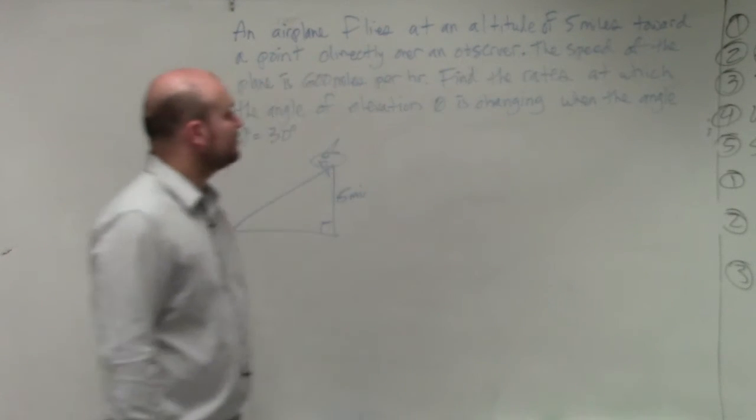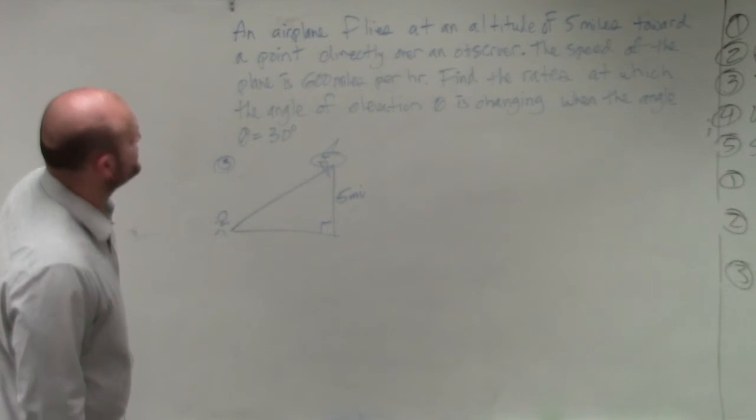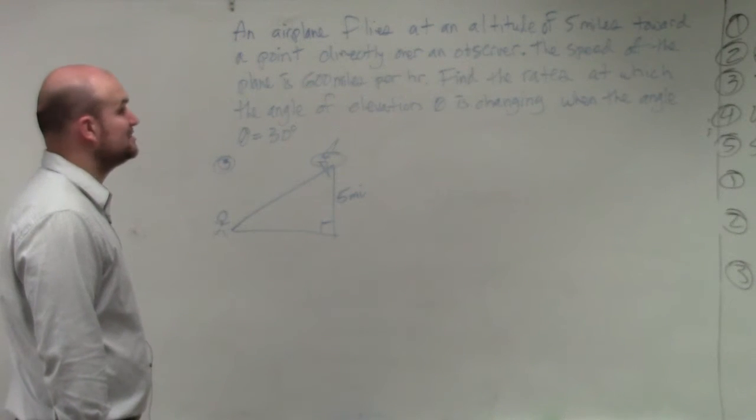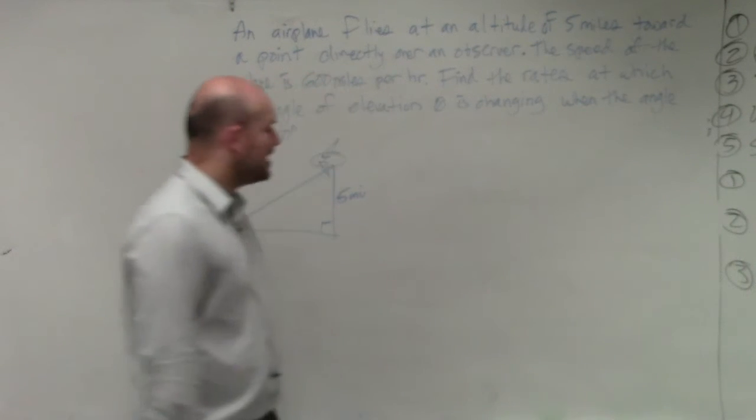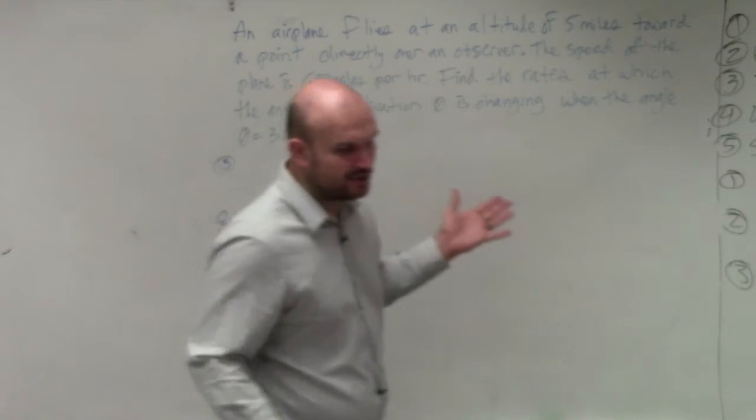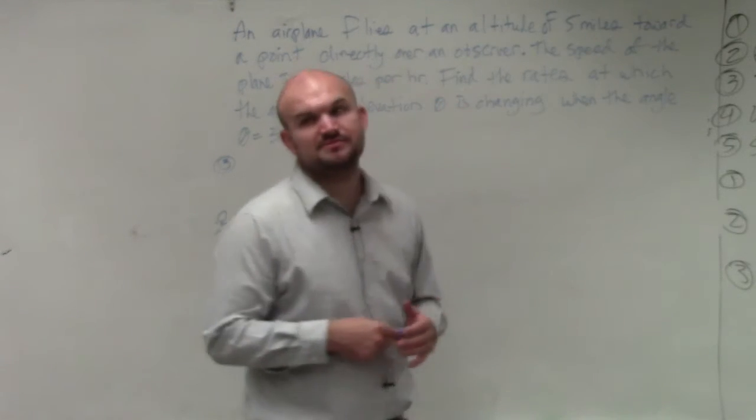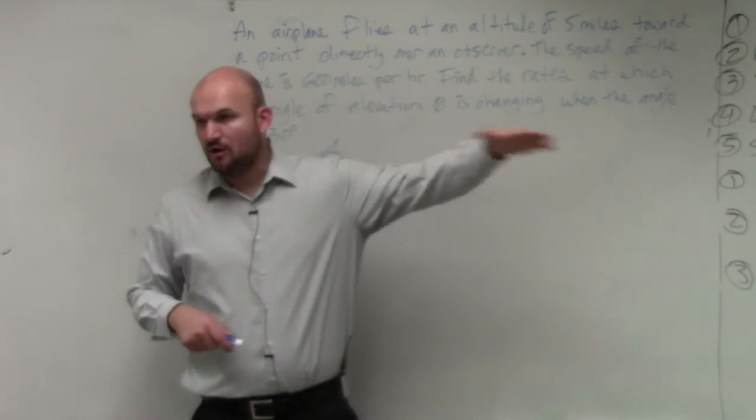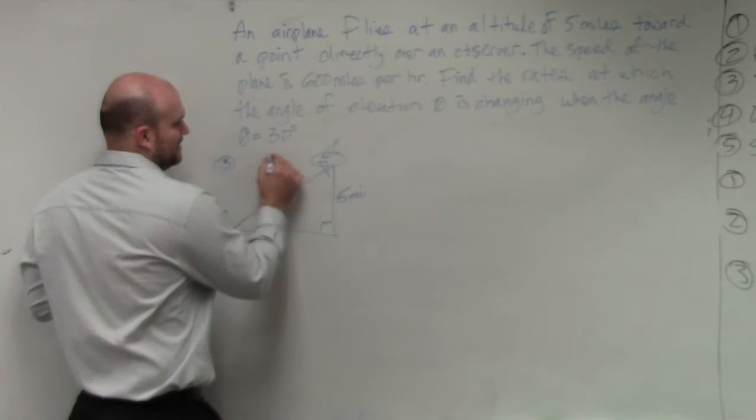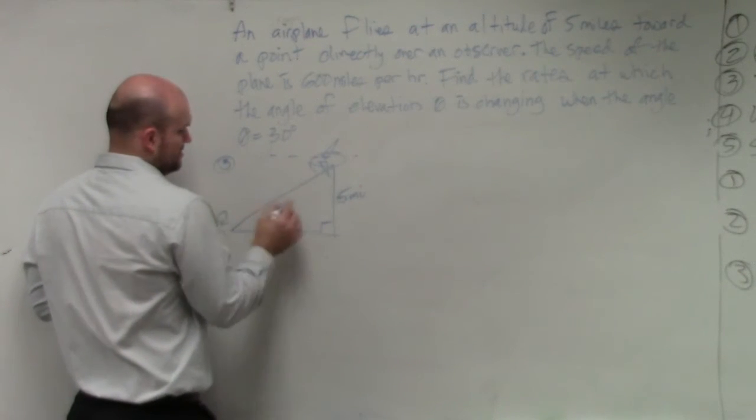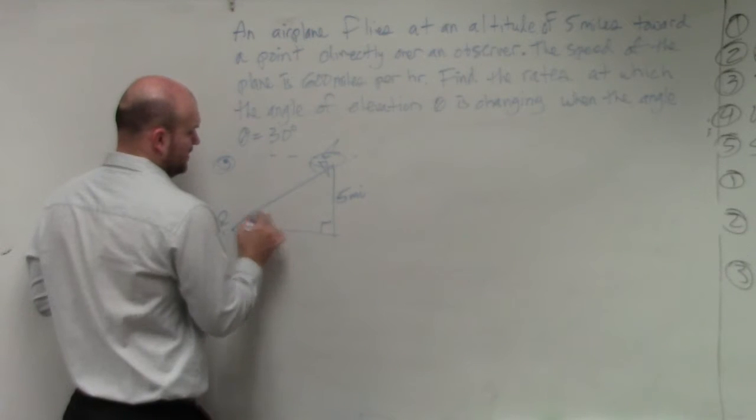Find the rates at which the angle of elevation theta is changing when the angle of theta equals 30 degrees. So I have a nice little picture. We talk about angle of elevation. If you guys remember, angle of elevation is from a horizontal line. Angle of elevation will be going up. So this would be the angle of depression. Here would be your angle of elevation, all right?